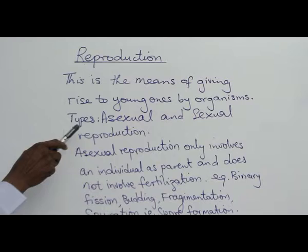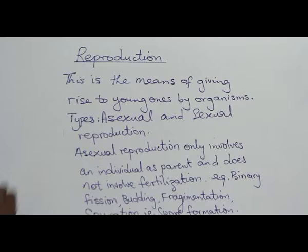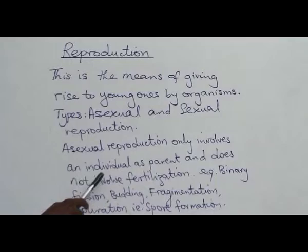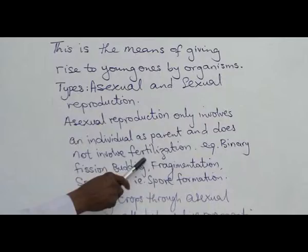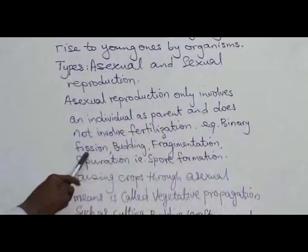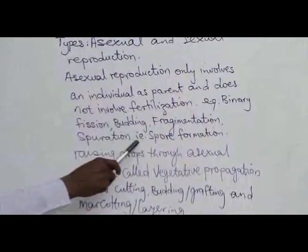We have two types: asexual and sexual reproduction. Asexual reproduction only involves an individual as parent and does not involve fertilization. Examples include binary fission, budding, fragmentation, and sporulation, which means spore formation.